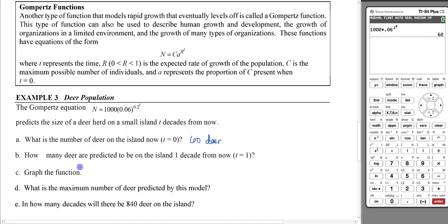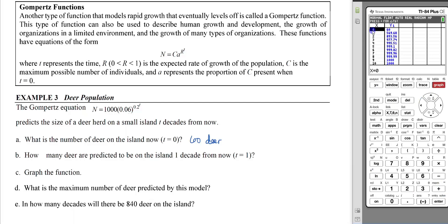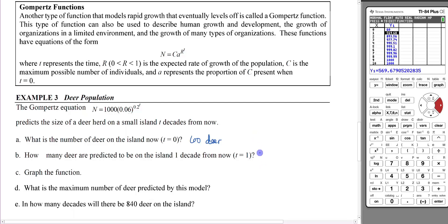We're going to be doing other computations and also looking at the graph, so let's put it into the equation editor: 1000 times 0.06^(0.2^x). Then we can look at the table. At time 0 we have 60 deer. How many deer are predicted to be on the island one decade from now? T would equal 1 then. Remember T is the number of decades from now. Looks like 570 deer.